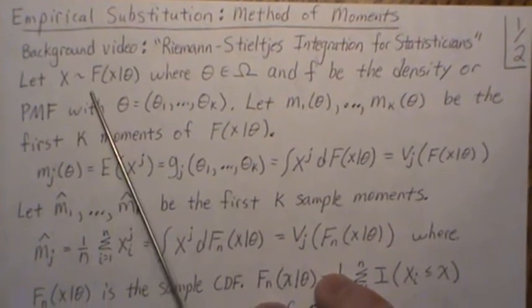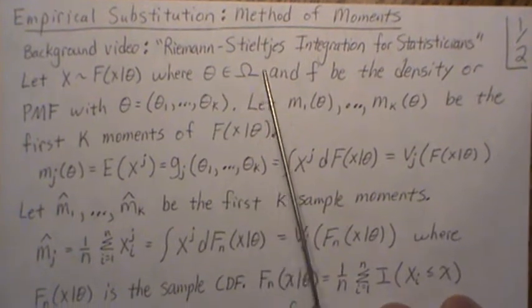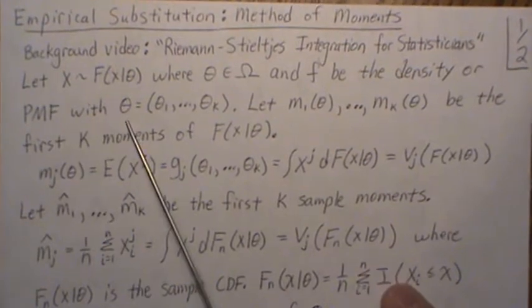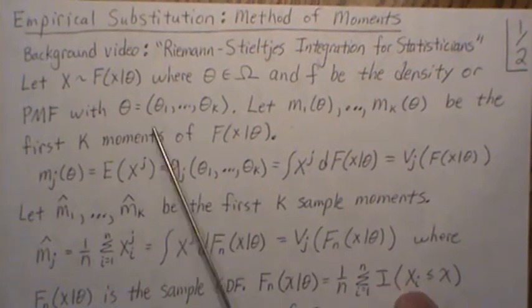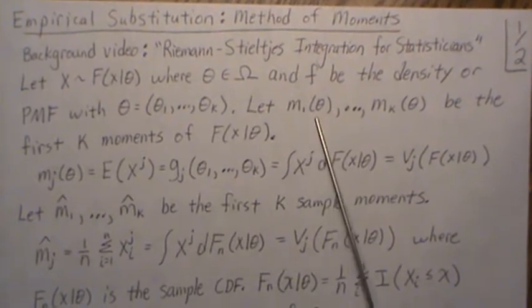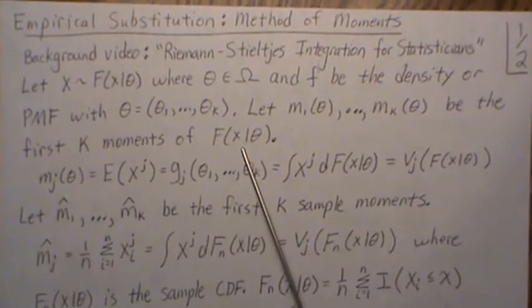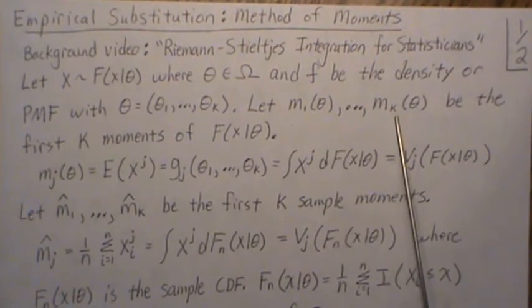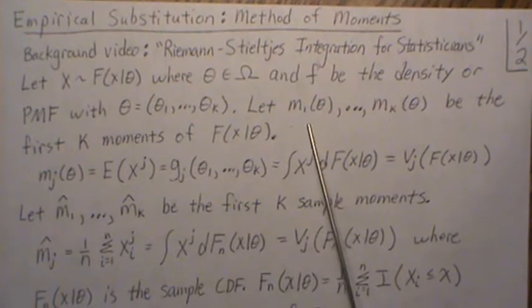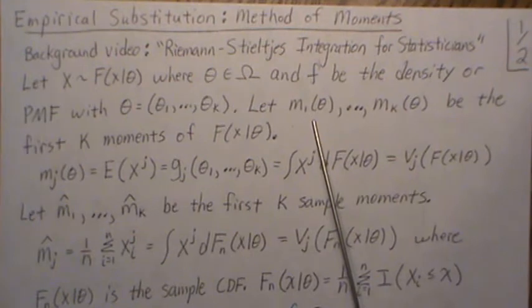Let X be distributed with F where θ is in the parameter space Ω and F be the density or probability mass function with θ potentially being vector valued. Let m₁(θ) all the way up to mₖ(θ) be the first k moments of F. Now you might ask why do we do k, and the reason is there's k unknowns, so we need to create k equations for k unknowns in order to solve it.